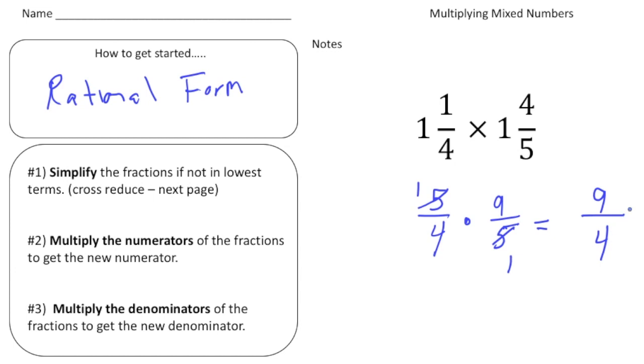And then finally we have the answer of 9 fourths. Now I'm going to make that a mixed number. So 9 fourths is really 2 and 1 fourths. And that's our answer.